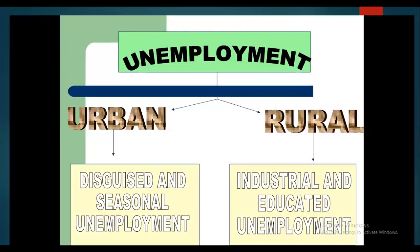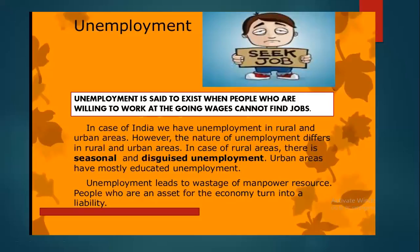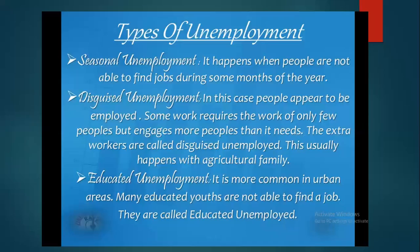Okay, so class, let's continue with our chapter of People as Resource. In the last class we have seen how unemployment is further divided into urban and rural, disguised and hidden unemployment, industrial and regional unemployment. We have seen what's the meaning of unemployment — that if a person is willing to work and not getting a proper job, that is considered as unemployment. So now let's move on.